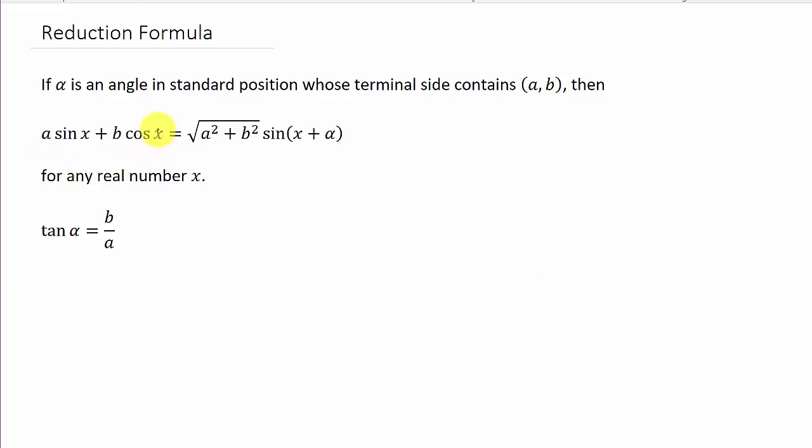So what we're doing is we have sine x plus cosine x, and we have a coefficient for each one here. And what we're going to do is we're going to rewrite it as a single sine function. Instead of having two trig functions added together, it's just going to be a single one. So if alpha is an angle in standard position whose terminal side contains (a,b), then a sin x plus b cos x is equal to the square root of a squared plus b squared times sine of x plus alpha for any real number x.